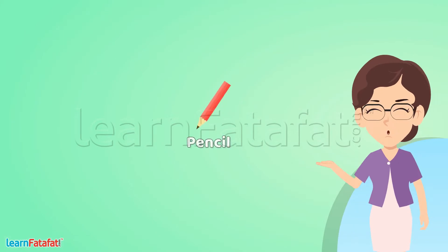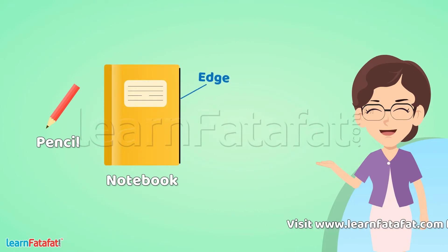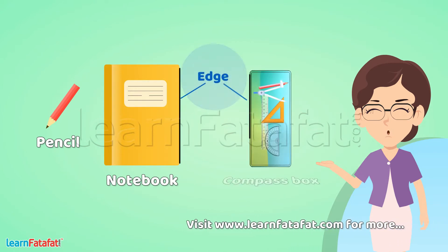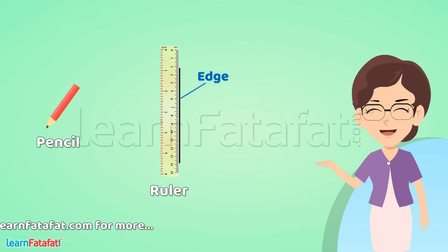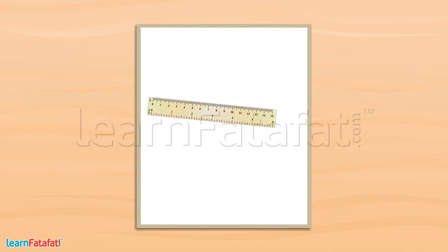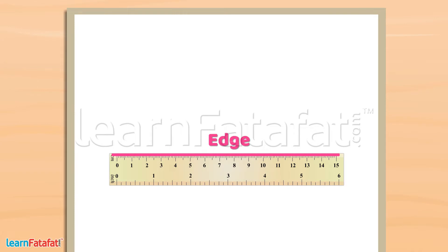With the help of a pencil and any straight edge — like the edge of a notebook or the edge of a compass box — but usually we use the edge of a ruler. Take a ruler, place it on a paper, keep it fixed, and make a mark along its edge like this.